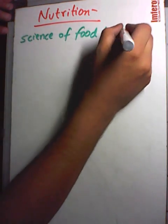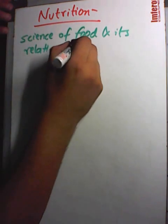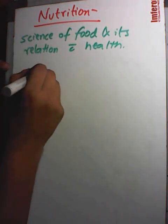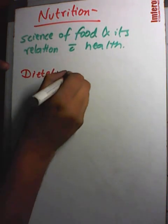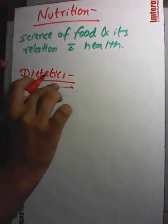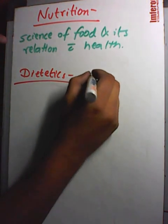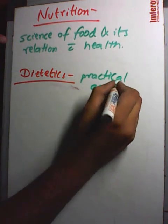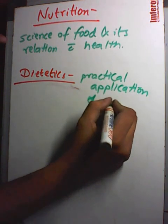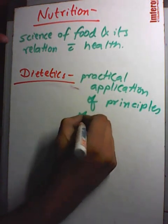We come to the topic of nutrition. Nutrition is defined as the science of food and its relationship with health. Then I introduce another term, dietetics. Dietetics is the practical application of the principles of nutrition.